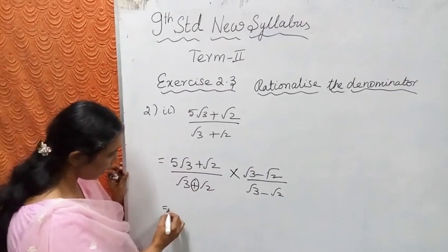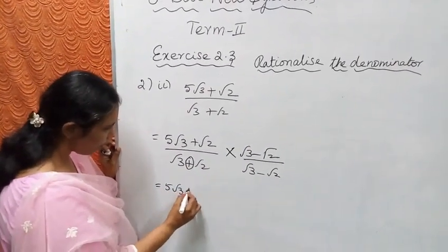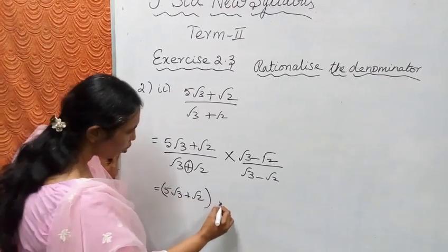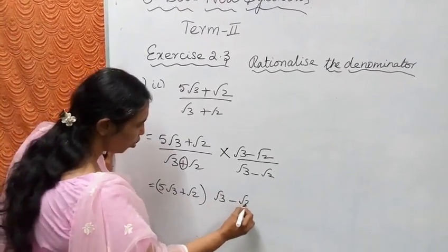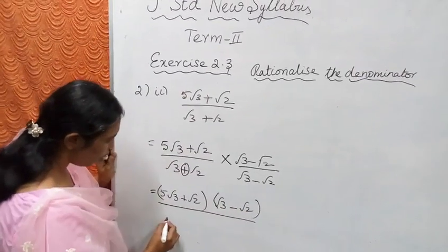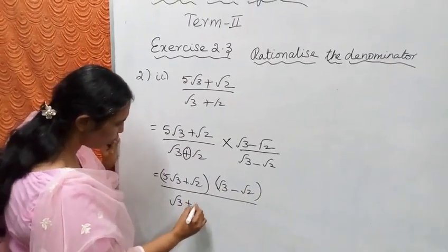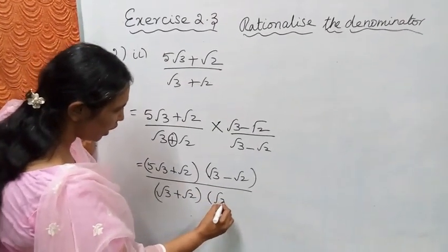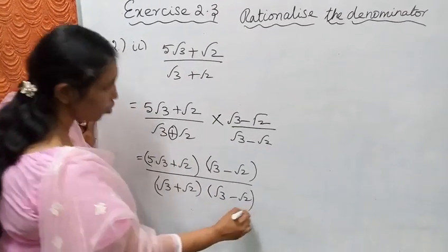Okay students. Write 5√3 plus √2, then multiply by √3 minus √2, divided by √3 plus √2 into √3 minus √2.